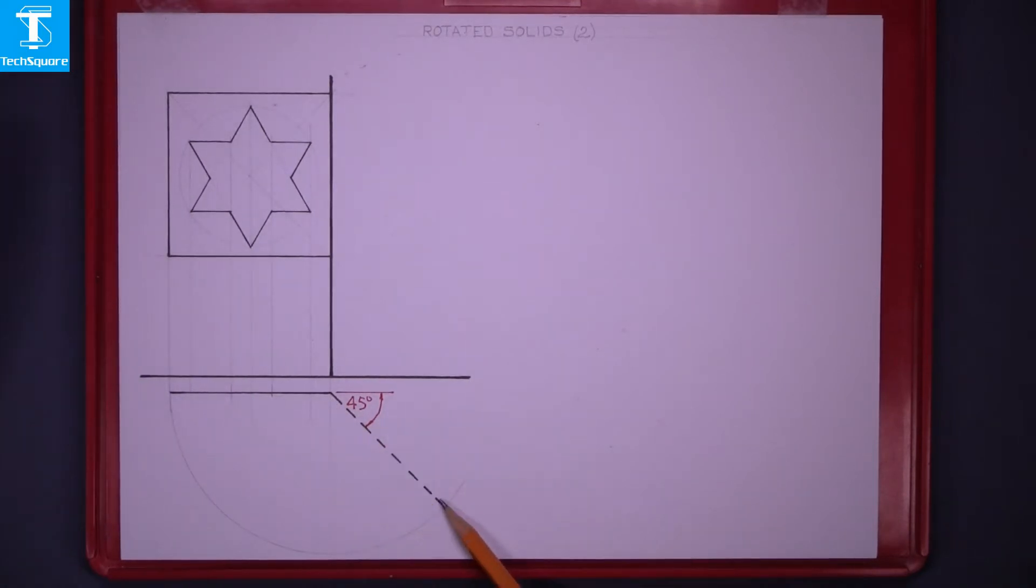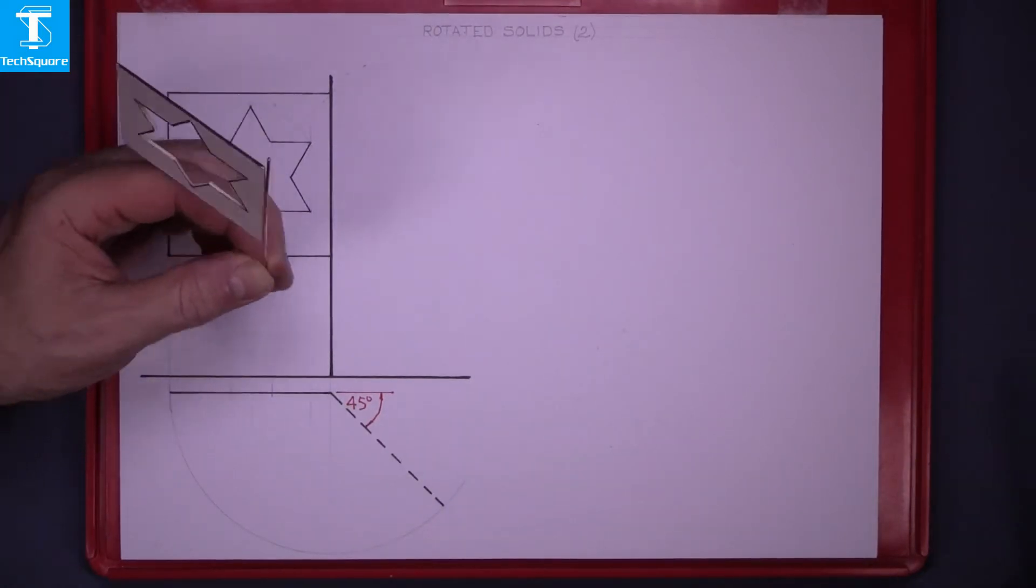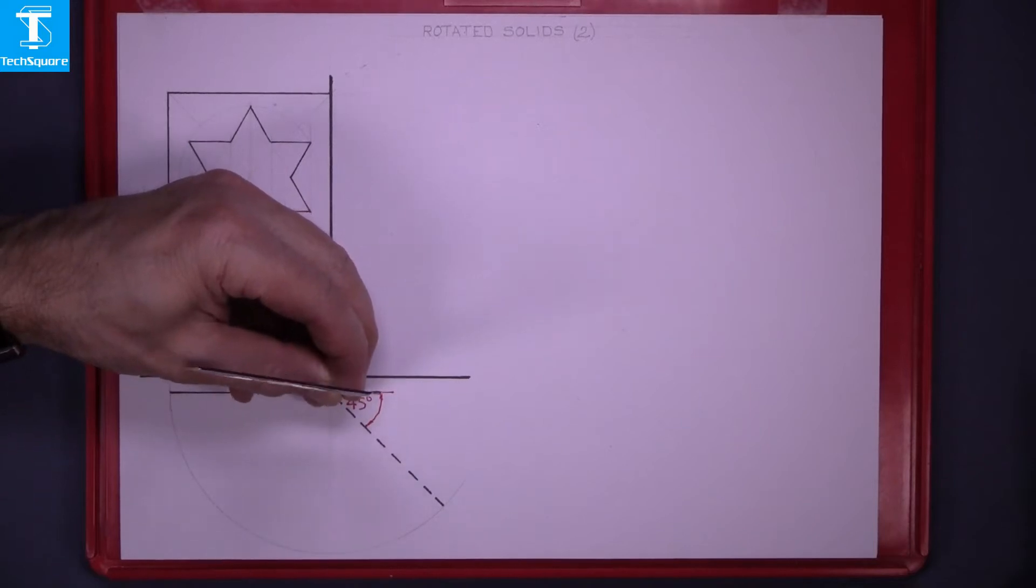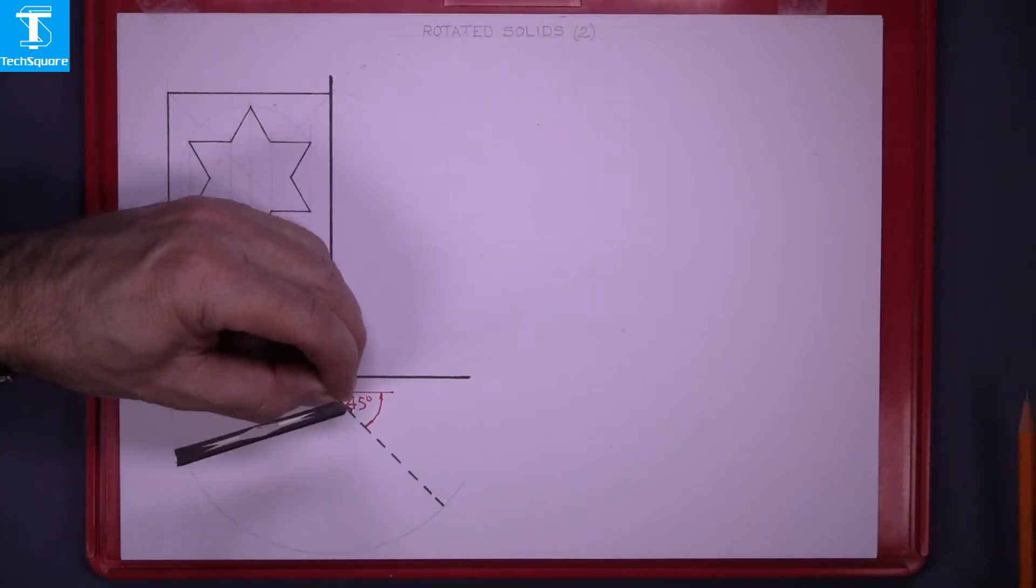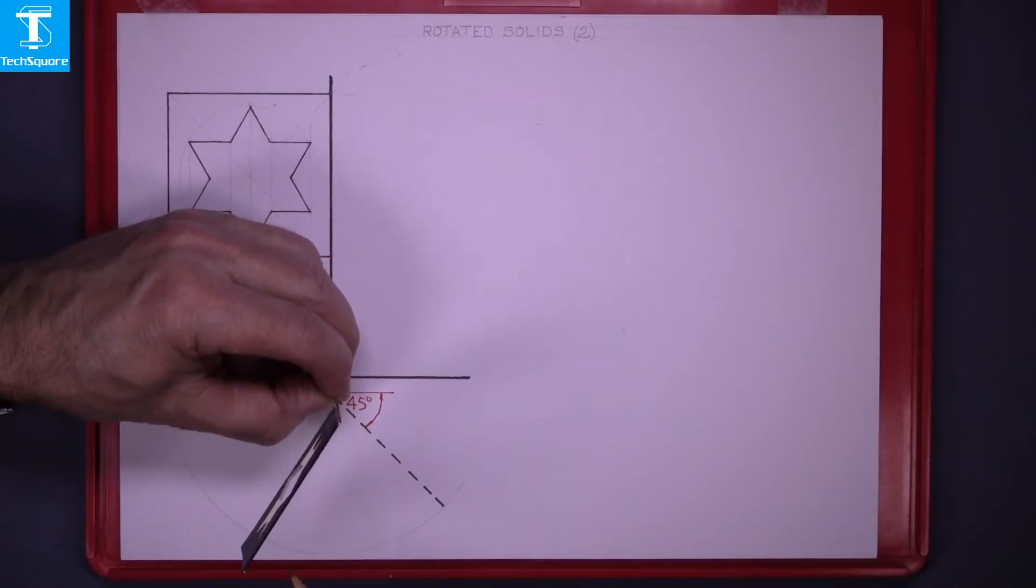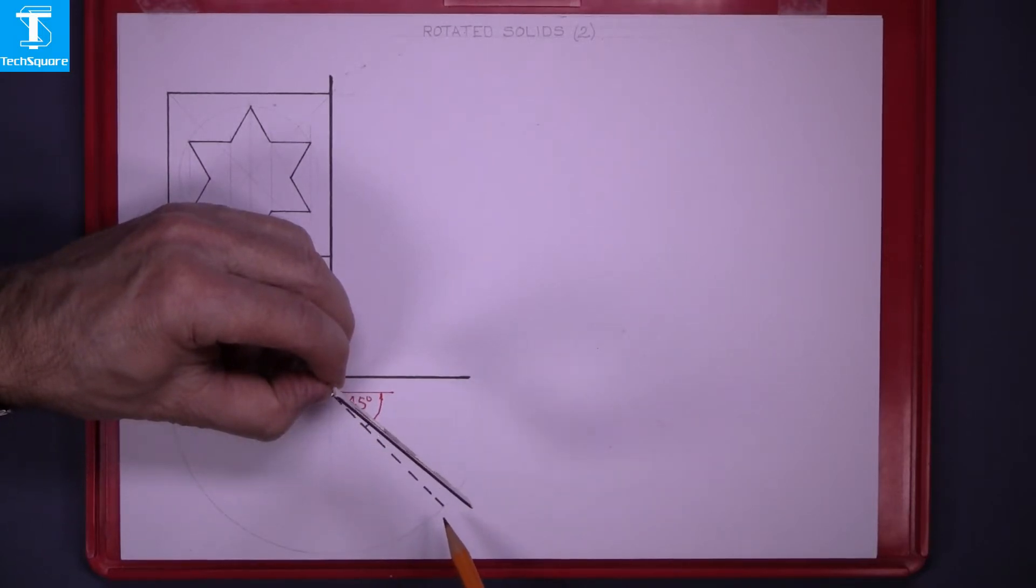As it rotated to the 45 degree position. This is what it looks like looking directly down on it, and as it rotates, the end of the sign follows the circle until it gets to the dotted line, and that's the position that we require now.